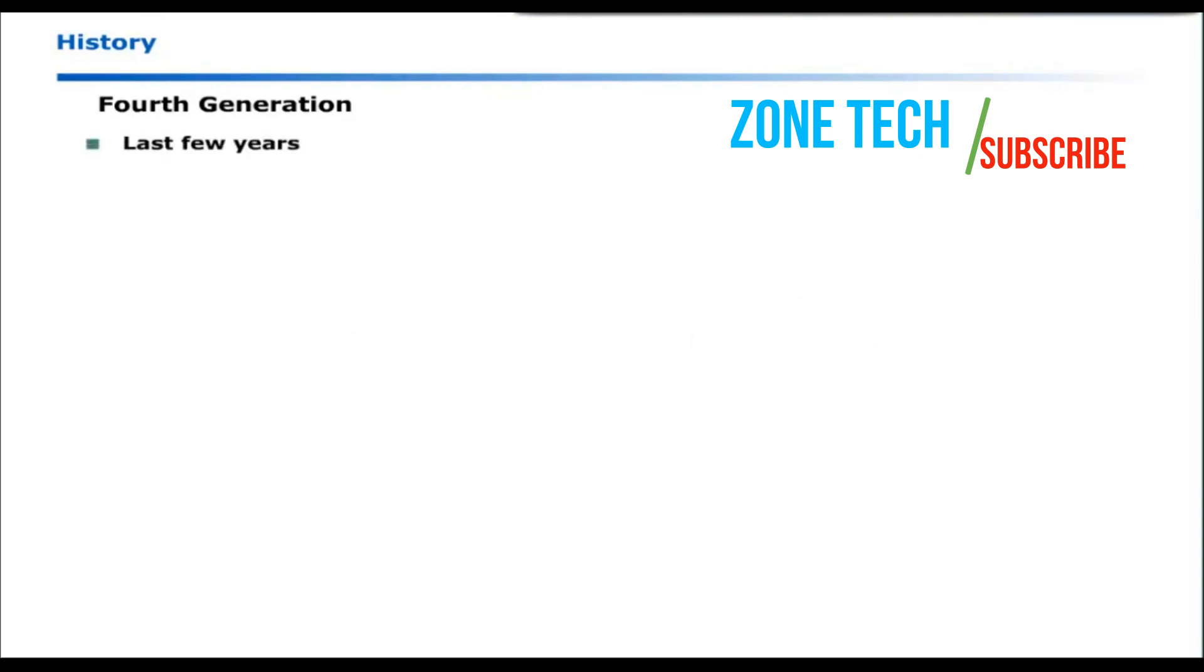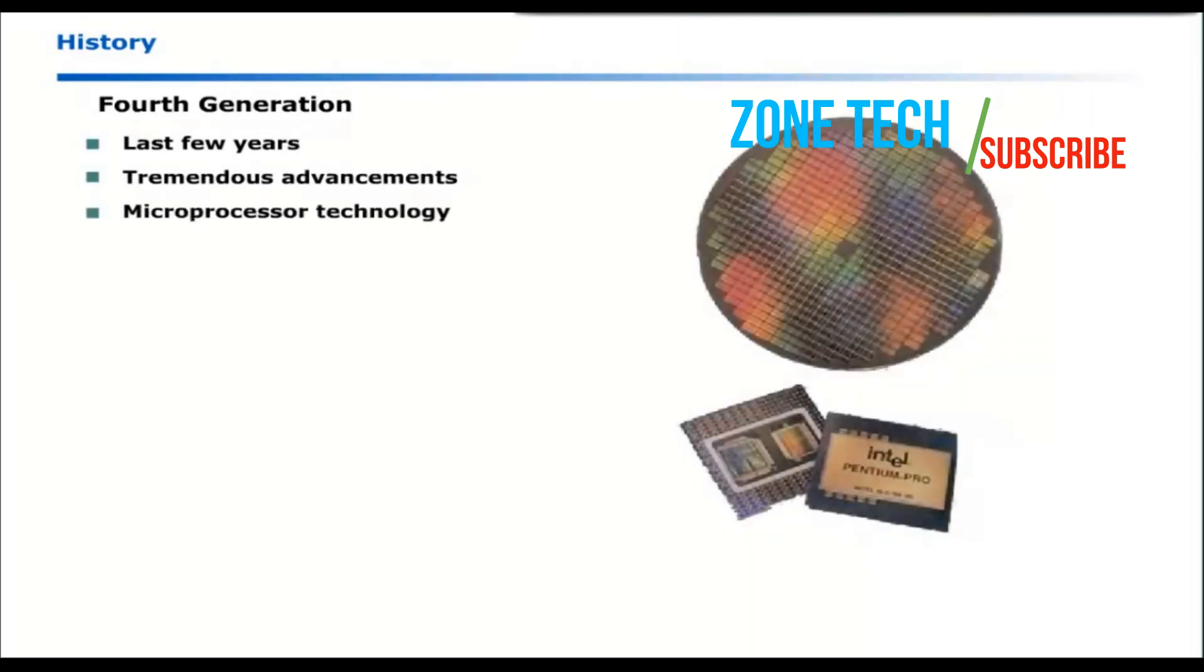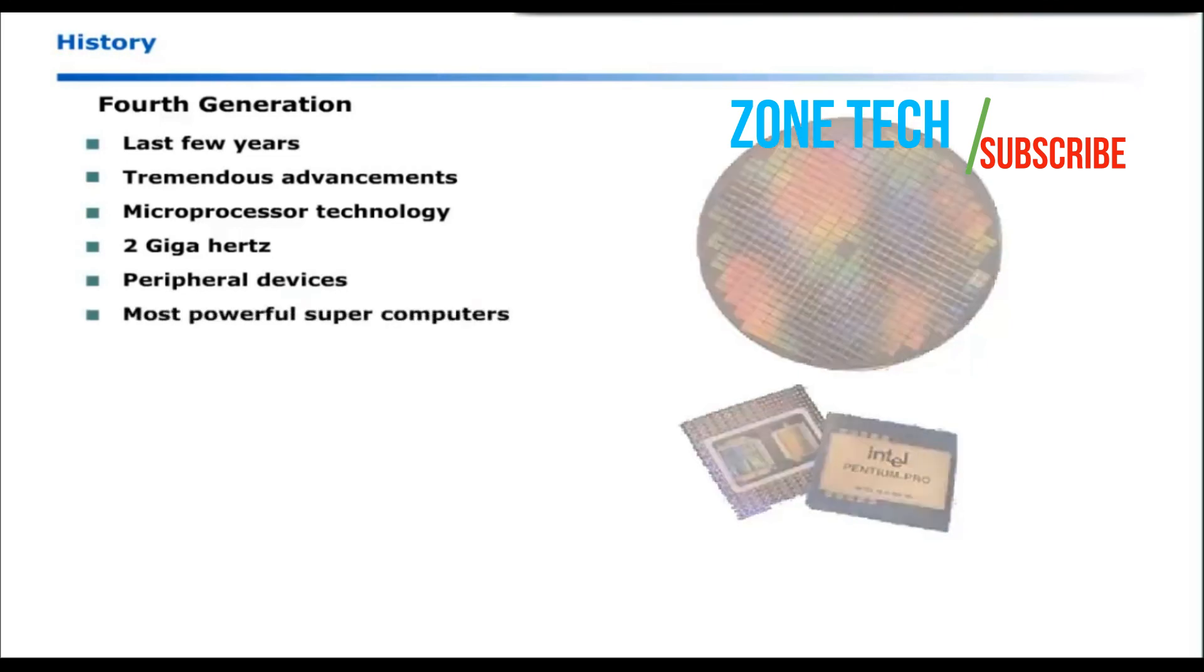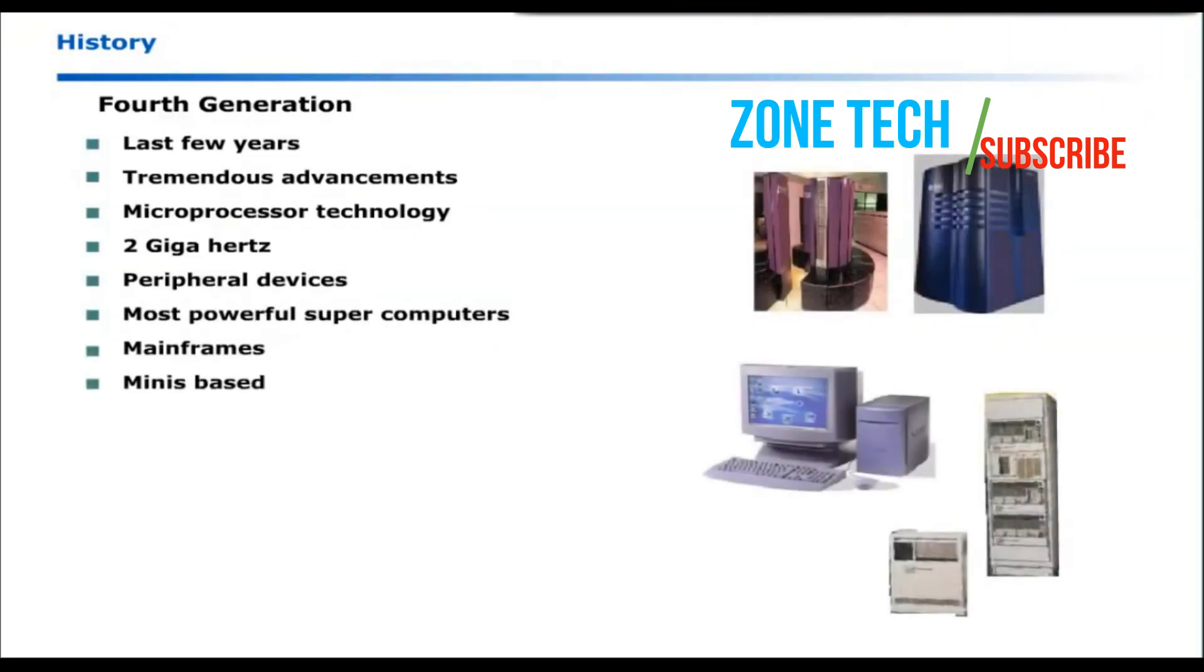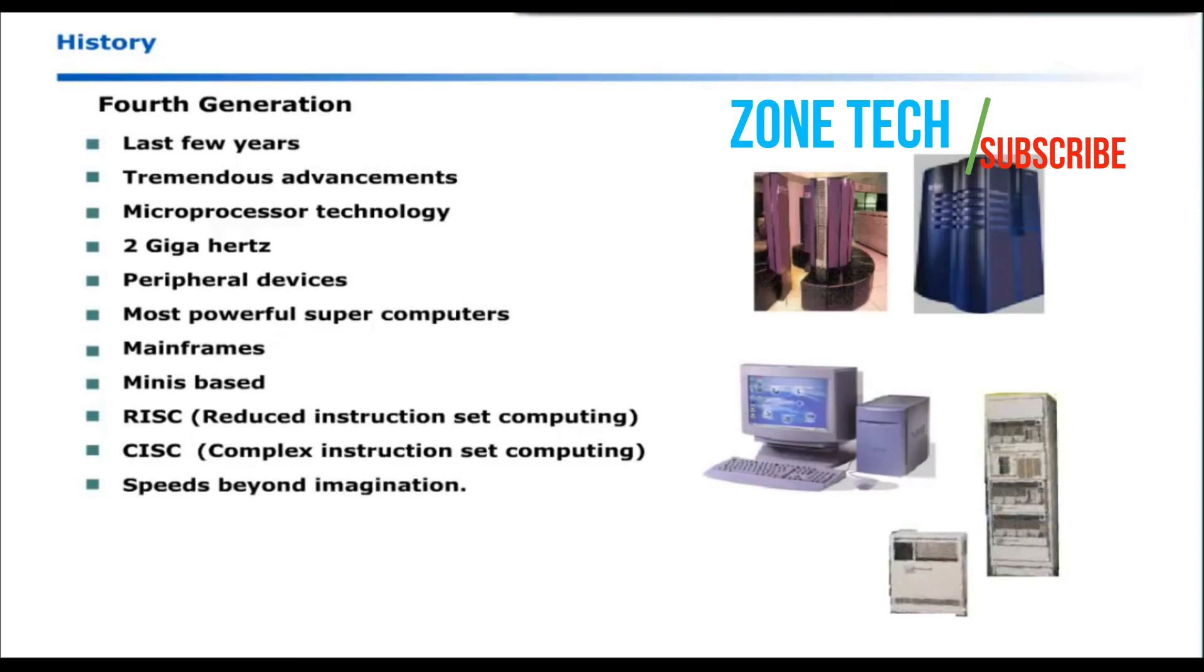During the last few years, there has been a tremendous advancement in microprocessor technology and now personal computers operate at speeds up to 2GHz. There has been a considerable advancement in peripheral devices. Most powerful supercomputers, mainframes and minis based on RISC and CISC computing technologies are available at speeds beyond imagination.